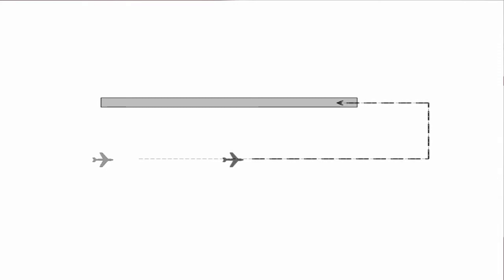What I've found works better is when you come into an approach on downwind, get your speed reduced by the departure end of the strip, start coming down with the flaps, and at midfield what you're looking for is 20 degrees of flaps at 60 knots.